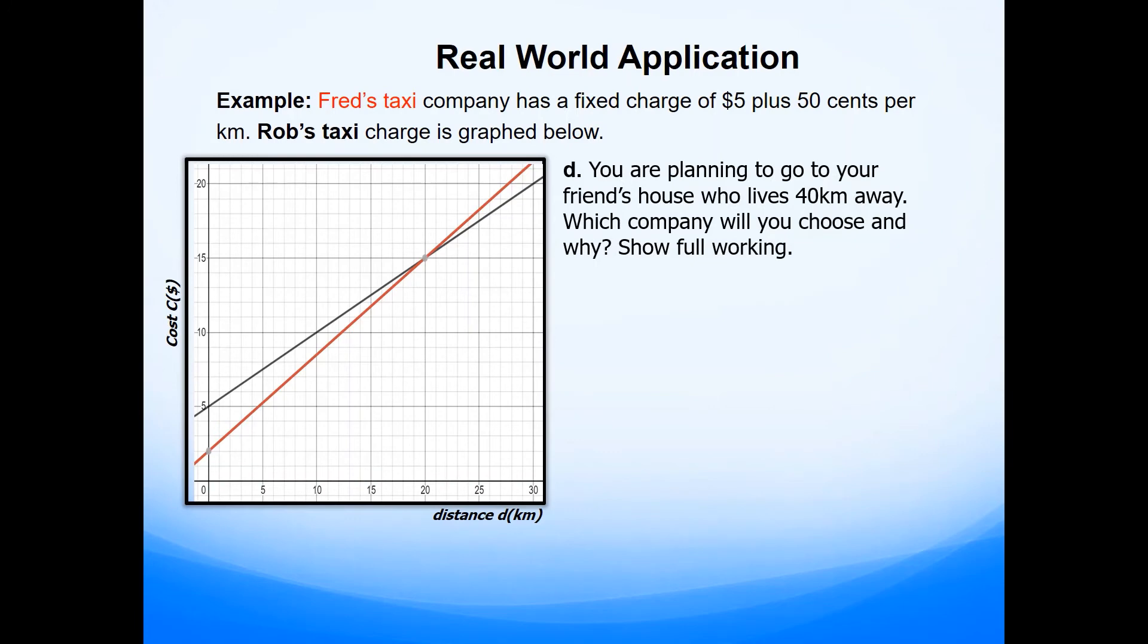Part D says, now you're planning to go to your friend's house who lives 40 kilometers away from your place. Which company will you choose and why? So you have to answer this question by showing the full working. It says distance of 40 kilometers. So I can't read that information off the graph. So what I will do is use the equations that I have derived earlier for each of the two companies.